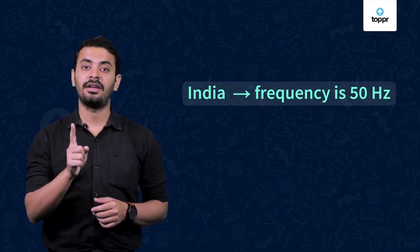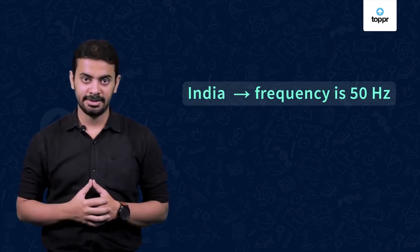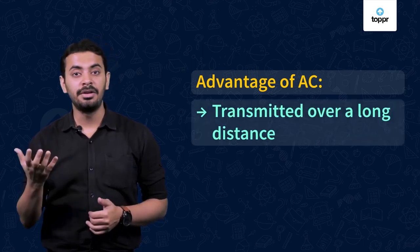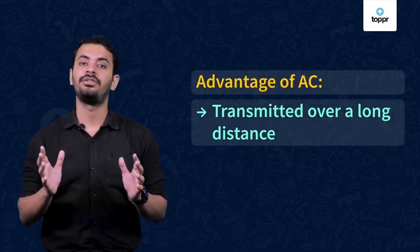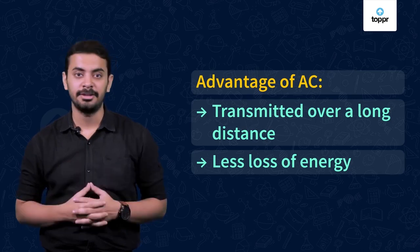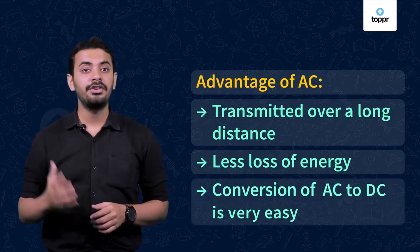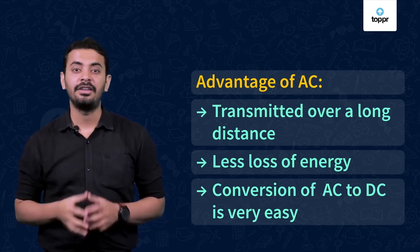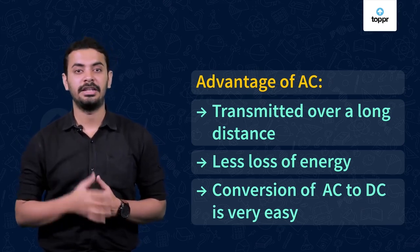In the general pattern followed in India, the polarity of AC changes after every hundredth of a second — that is, the frequency of this current is 50 Hertz. The main advantage of using AC is that it can be transmitted over a long distance with less loss of energy compared to DC. Also, the conversion of AC to DC is very easy and is possible even through our mobile chargers.